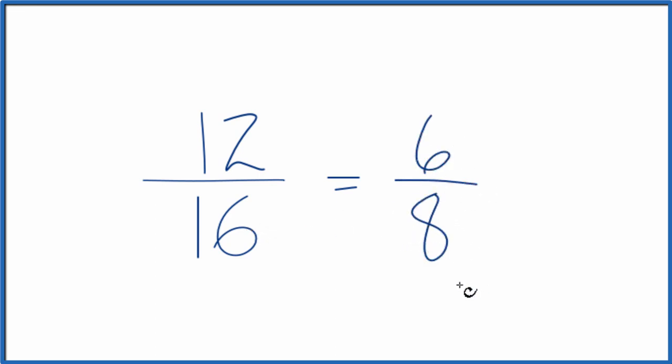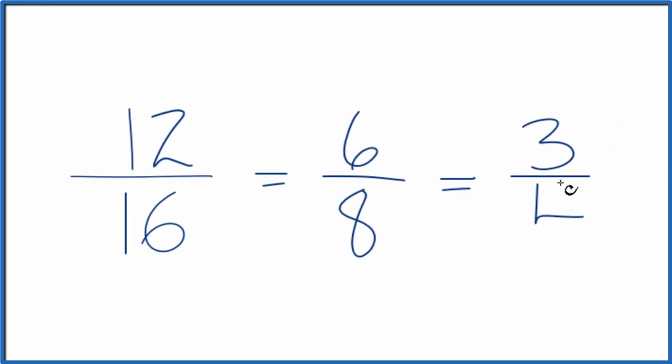So 6 8ths, that's an equivalent fraction for 12 16ths. We can do this again since they're both even numbers. 6 divided by 2 is 3. 8 divided by 2 is 4. 3 4ths is another equivalent fraction for 12 16ths and for 6 8ths.